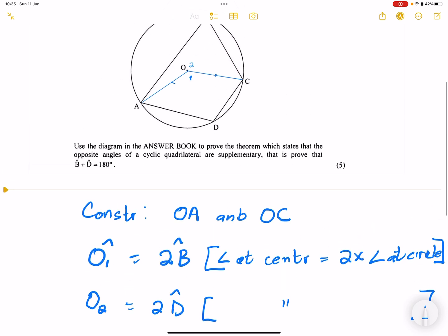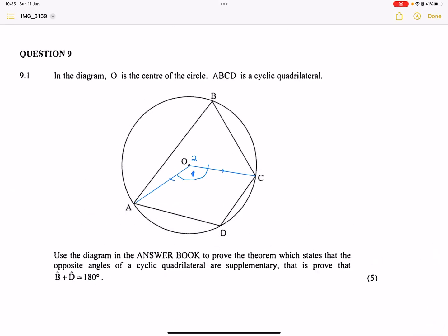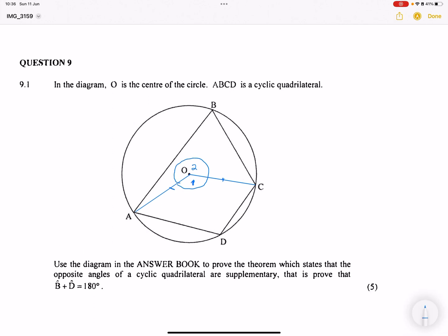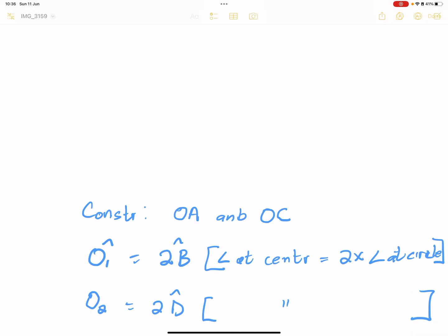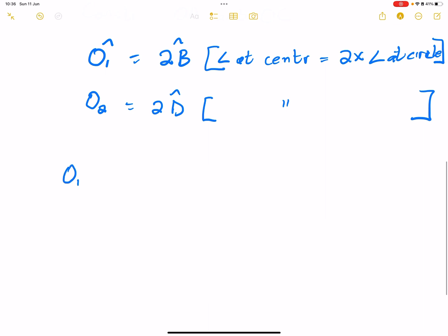But now we know that O1 plus O2... This is a revolution. So we know this is the sum of angles on a revolution, in this case, that would be equal to 360. So we know that angle O1 plus angle O2 will give us 360. So that's angle on a revolution, or you can say angles around a circle or angles around the point.